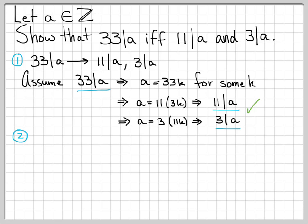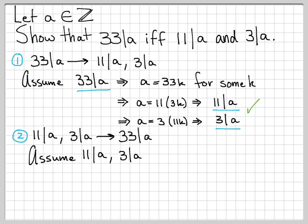For the second case, we want to show that 11 dividing a and 3 dividing a implies that 33 divides a. So again, we're going to assume 11 divides a and 3 divides a. So what does this mean? That means that I can write a as 3k for some k. It also means that I can write a equal to 11L for some L. That's what both of these statements mean.